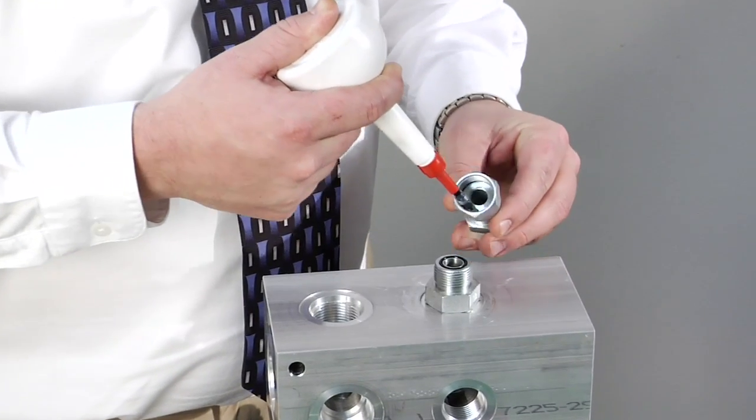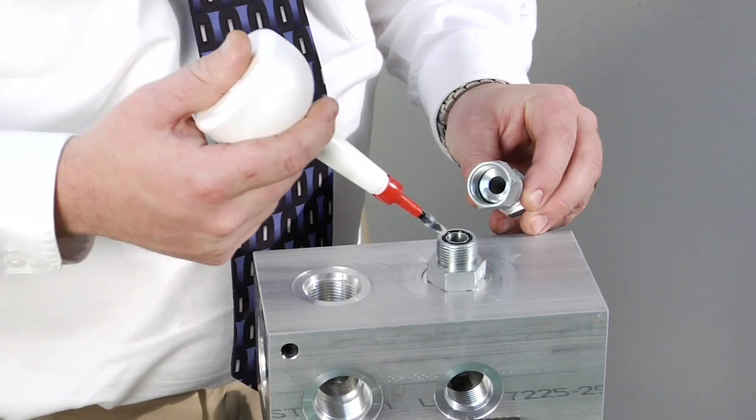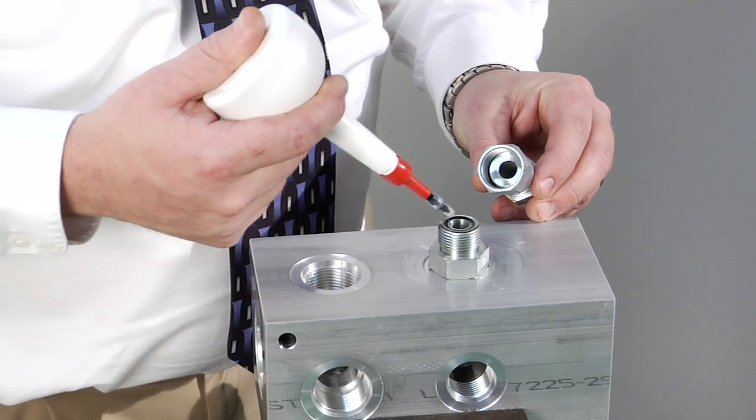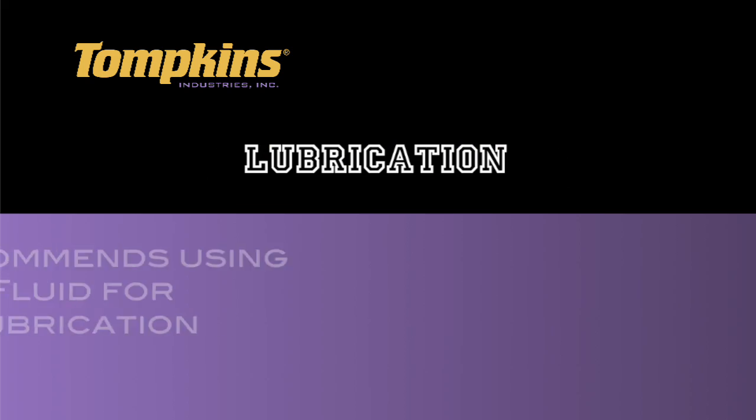Fully lubricate the O-ring and apply at least one drop of lubricant to the thread of the flange nut. Tompkins recommends using system fluid for lubrication purposes.